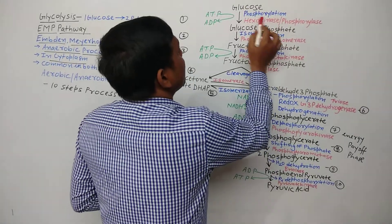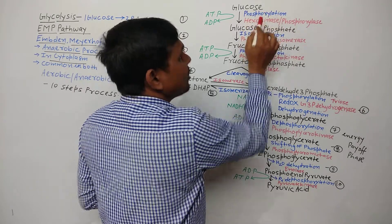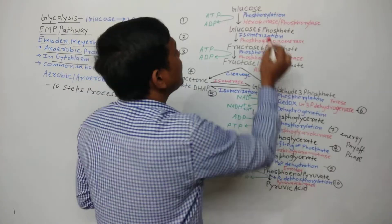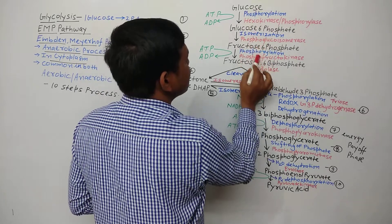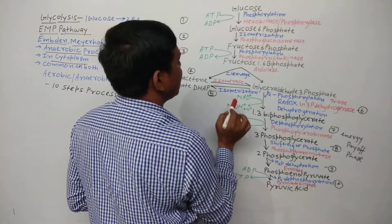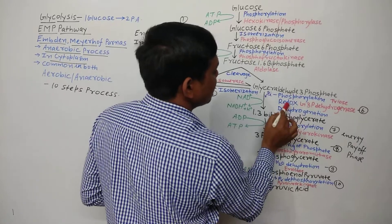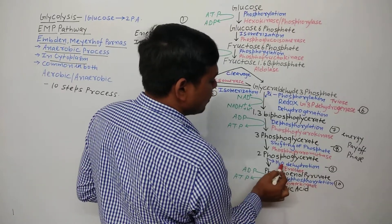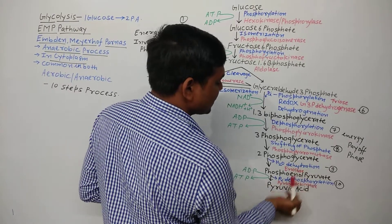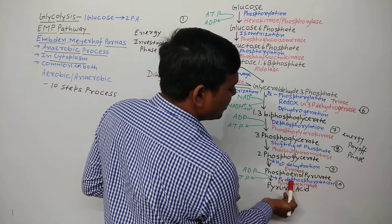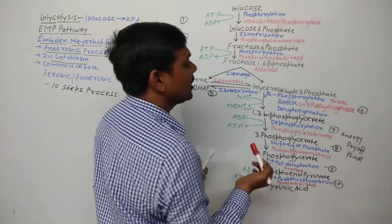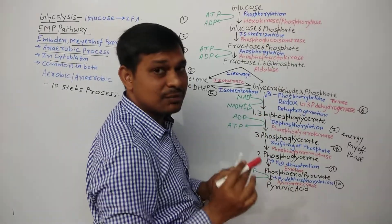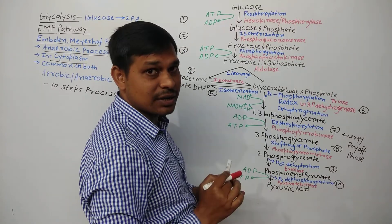The text written in blue represents the names of the processes — such as phosphorylation, isomerization, cleavage, redox reaction, dehydrogenation, dephosphorylation, shifting of phosphate, dehydration — indicating which process converts one molecule to another. The text written in red represents the names of the enzymes that participate in each reaction.